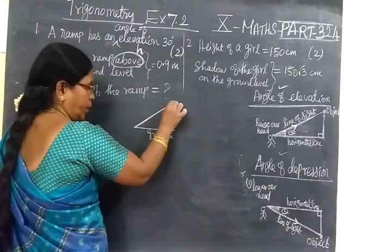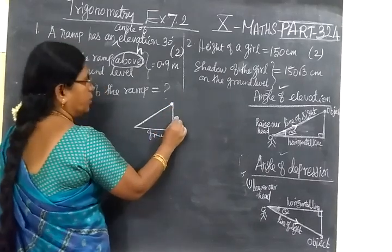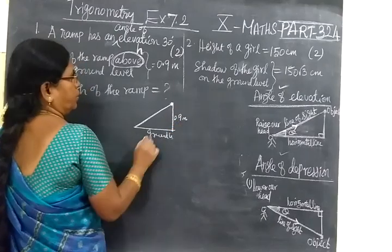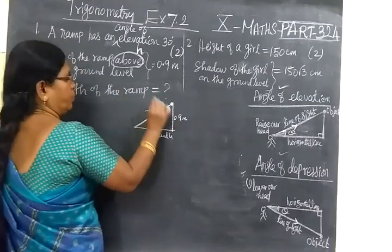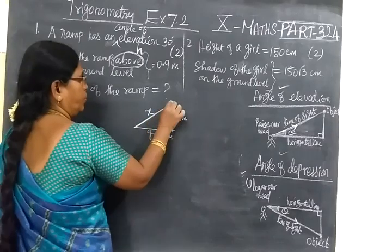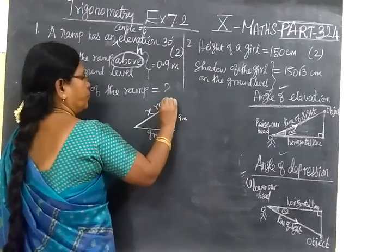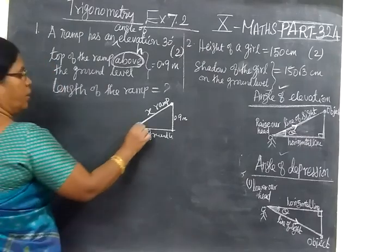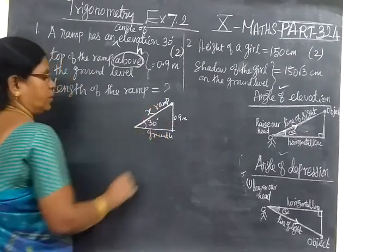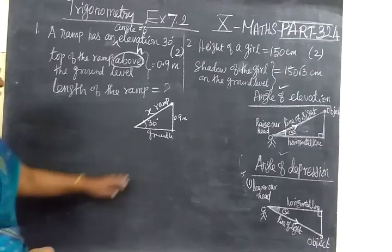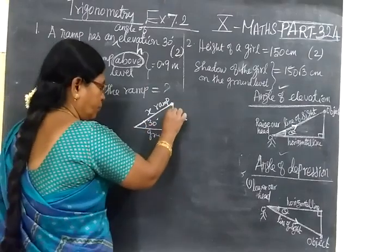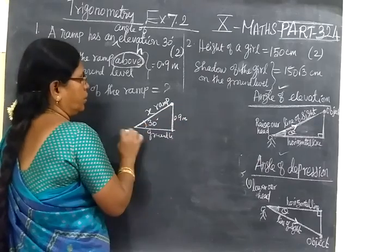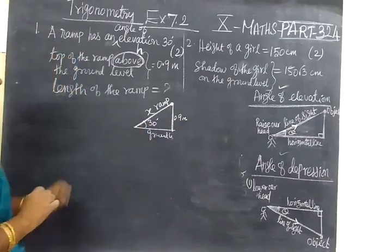And the top of the ramp above the ground level is 0.9 meter. And we want to find length of the ramp. This is length of the ramp. This is ramp. This length of the ramp we have to find. And angle of elevation given as 30 degrees. So this is ground level, and this is height, and this top of this ramp.